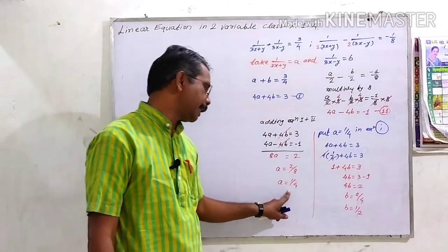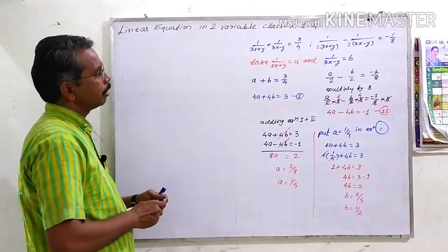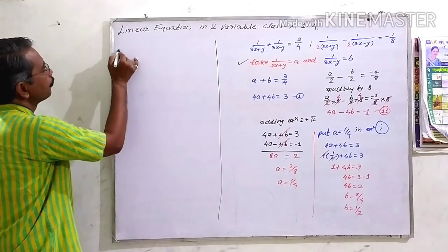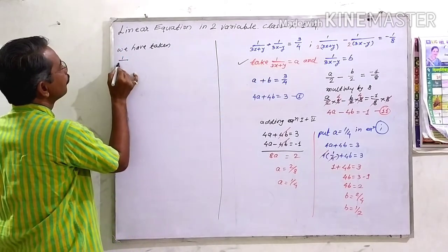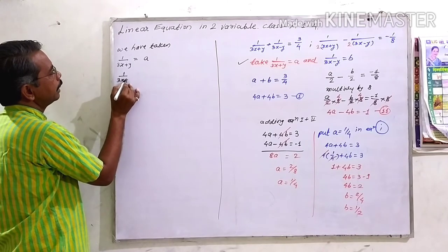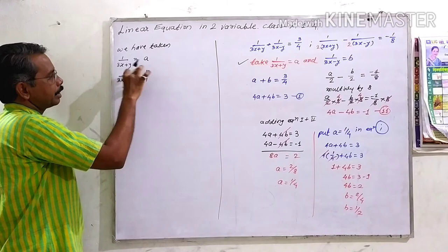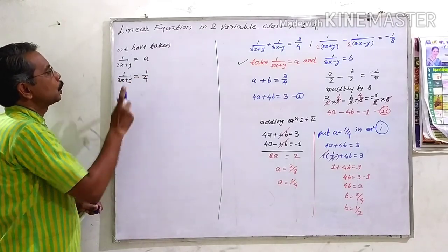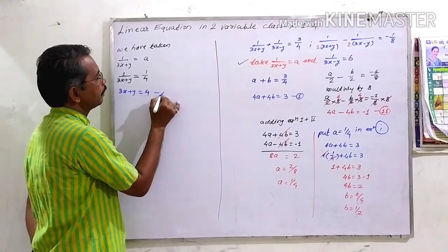Now we have the value of a and b, but we need to find the values of x and y. Recalling that 1 upon (3x plus y) equal to a, we write 1 upon (3x plus y) equal to a, where a means 1 upon 4. Since both sides are fractions, we cross multiply: 1 times 4 and 1 times (3x plus y), giving 3x plus y equal to 4. Let this be equation number A.